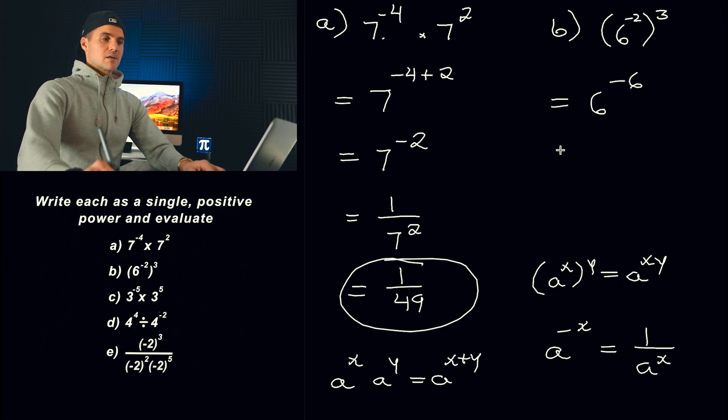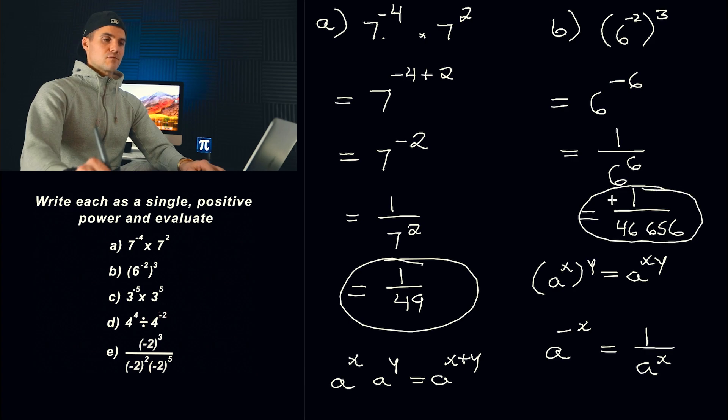And then again, we got 6^(-6). Got to change that to have a positive exponent. So it would be 1 over 6^6. So that would be with a positive exponent. And then to evaluate it, 6 to the power of 6, that would give us 46,656. So that would be the final answer for part B.